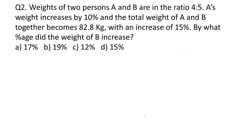Next question: the weights of two persons A and B are in the ratio 4:5. I can assume their weights to be 4x and 5x respectively. A's weight increases by 10%, so I multiply 4x by 1.1, which gives 4.4x.